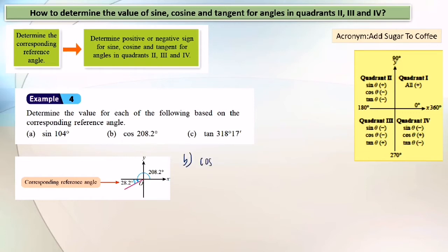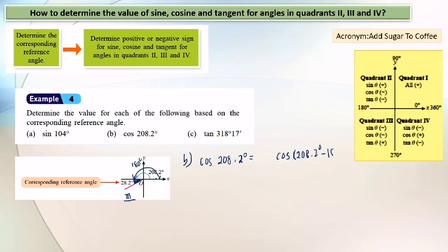Part B: cos 208.2 degrees. First you need to determine the corresponding reference angle. This angle is in the third quadrant, so the corresponding reference angle is 208.2 degrees minus 180 degrees. Next, you need to determine whether cosine is positive or negative in the third quadrant.